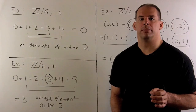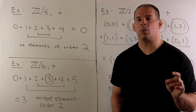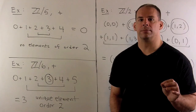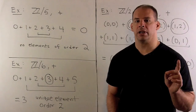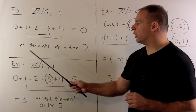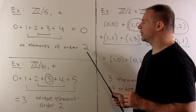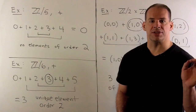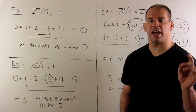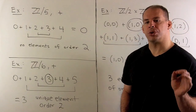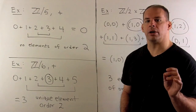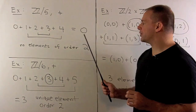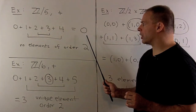For examples, let's start with Z mod 5 under addition. Here there are no elements of order 2. We take the sum, we get 10, which goes to 0 under mod 5 addition. So that agrees with our result.